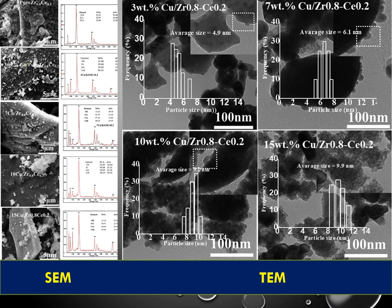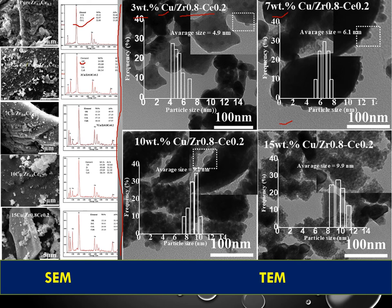You can see here the left side shows SEM images and the right side shows TEM images of the same material. From SEM you get elemental analysis and some morphology, but there is less clarity on morphology. In TEM images, you can see three, seven, ten, and fifteen weight percentages of copper on a zirconia support — studying how the active metal's weight percentage on the support affects orientation and what the size effects are.